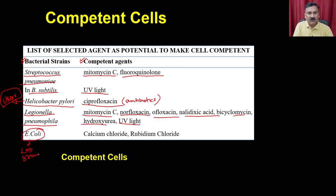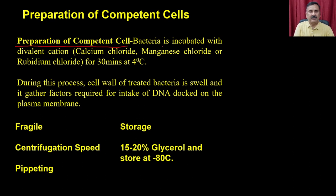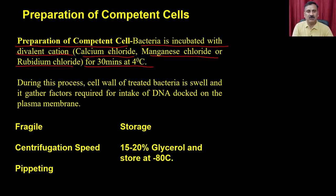For E. coli, the lab strain, cells are made competent by treating with divalent chemicals like calcium chloride and rubidium chloride. For the preparation of competent cells, bacteria are incubated with a divalent cation like calcium chloride, magnesium chloride, or rubidium chloride for 30 minutes at 4 degrees Celsius. During this process, the cell wall of the treated bacteria swells and gathers factors required for intake of DNA docked onto the plasma membrane.